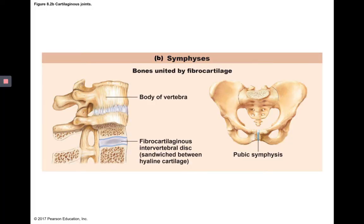Our examples are the intervertebral disc and the pubic symphysis — that anterior piece of fibrocartilage between the coxal bones.